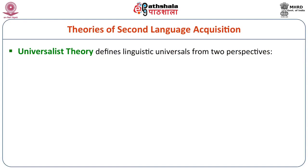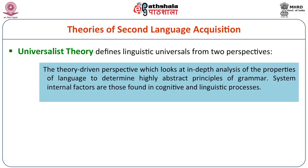Number one is the universalist theory, which defines linguistic universals from two perspectives. The theory-driven perspective looks at in-depth analysis of the properties of language to determine highly abstract principles of grammar. System-internal factors are those found in cognitive and linguistic processes.